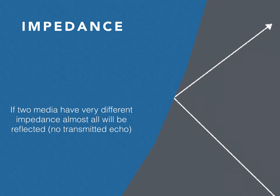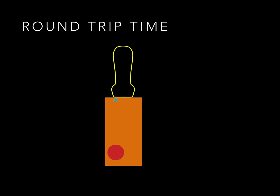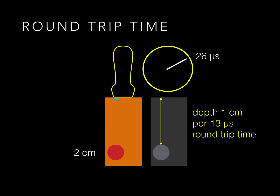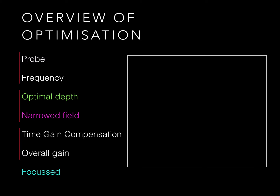When two media have very different impedances, almost all ultrasound will be reflected. Depth is determined by how long it takes for the echoes to return. For example, say there's an echogenic structure at two centimetres. The machine sends out a pulse which is reflected, and the round-trip time to the probe is 26 microseconds. Based on the speed of sound in tissue, the machine knows that the structure is two centimetres deep and shows that on the screen. This is how images are created.